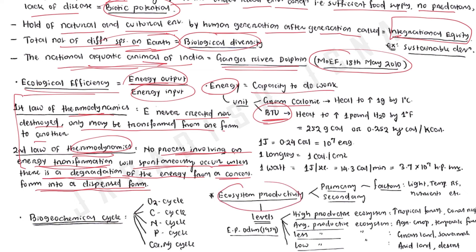Ecosystem productivity: primary productivity and secondary productivity have been covered. Factors affecting primary productivity include light, temperature, and nutrients. According to EP Odum (1959), high productive ecosystems are tropical forests and coral reefs; moderately productive ecosystems include agricultural crop ecosystems and temperate crop ecosystems; less productive ecosystems are grassland and savannah; and low productive ecosystems are drylands or desert ecosystems.